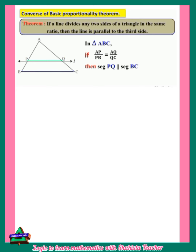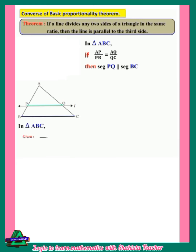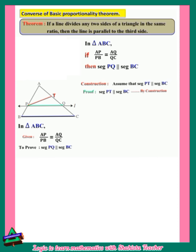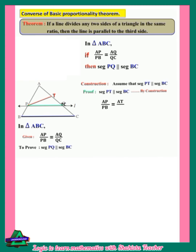Construction: assume that PT is parallel to BC. Proof: since PT is parallel to BC by construction, by the Basic Proportionality Theorem, AP upon PB equals AT upon TC — point number 1. But AP upon PB equals AQ upon QC is given in the question — point number 2. So from 1 and 2, LHS equals RHS.